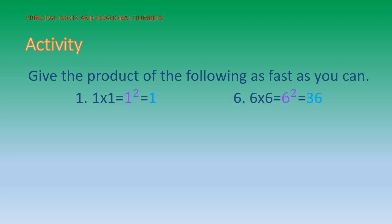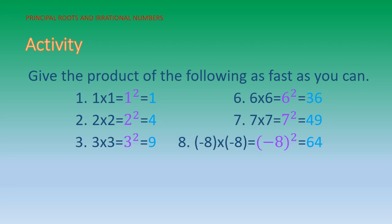Number one: 1×1 is the same as 1² = 1. Six times six is the same as 6² = 36. Number two: 2×2 is the same as 2² = 4, and 7×7 is the same as 7² = 49. Number three: 3×3 is the same as 3² = 9, and negative 8 times negative 8 is the same as (−8)² = 64.